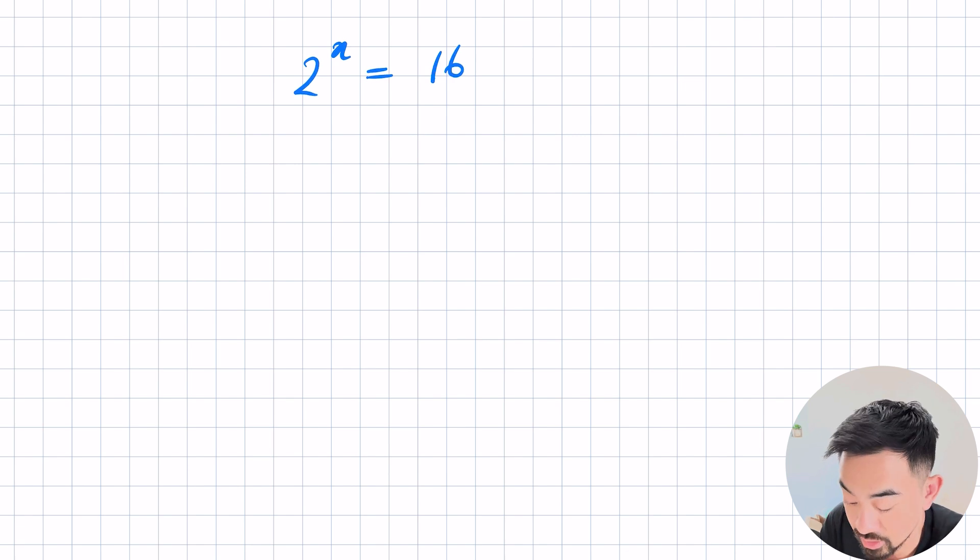Okay so this first example here 2 to the power of x is equal to 16. We started with a pretty straightforward one because you can kind of just guess and check and figure out, right, 2 to the power of what is equal to 16? So it's going to be 2, 4, 8, 16. So 2 to the power of 4 equals 16.